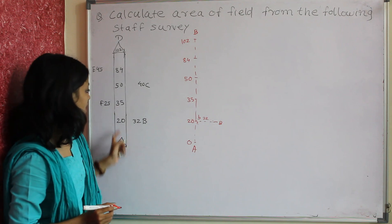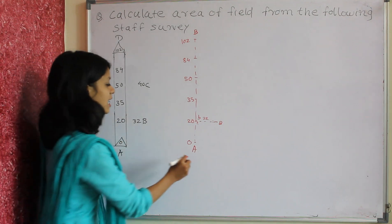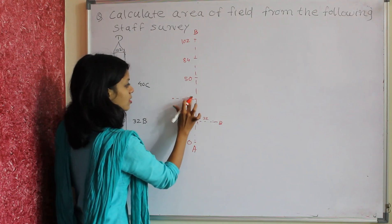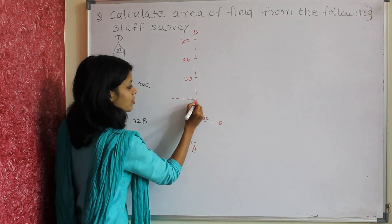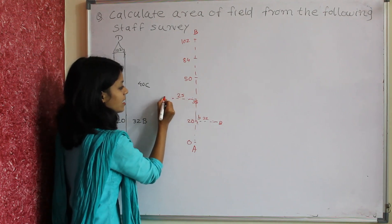Then at chainage 35 meters, the offset at F is 25 meters on the right hand side.